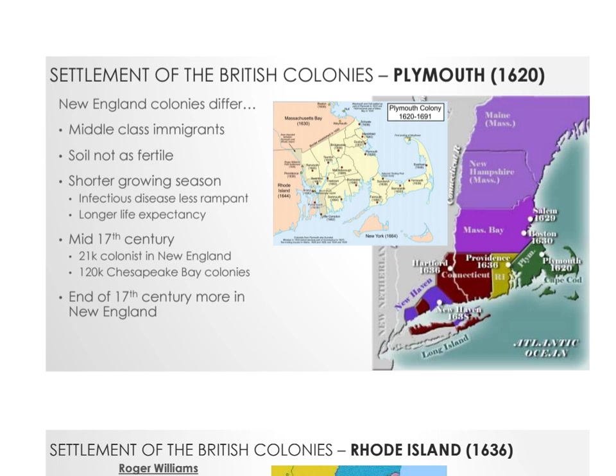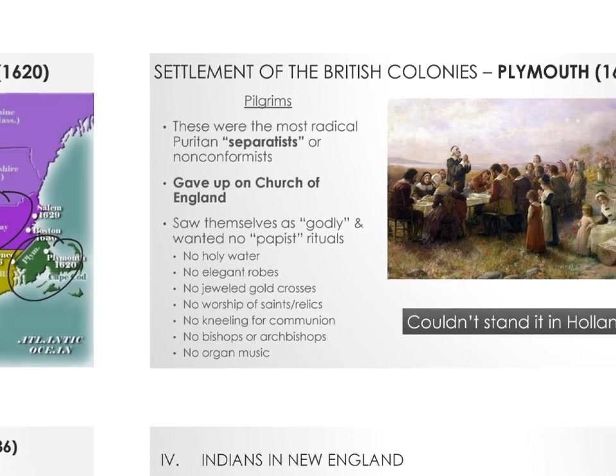New England — Plymouth for the Pilgrims, Massachusetts Bay for the Puritans — took off in population much faster than the South. The colder climate meant disease spread less easily, life expectancy was longer. By the end of the 1600s, there were more people in the North than the South, even though Jamestown had nearly a 100-year head start.